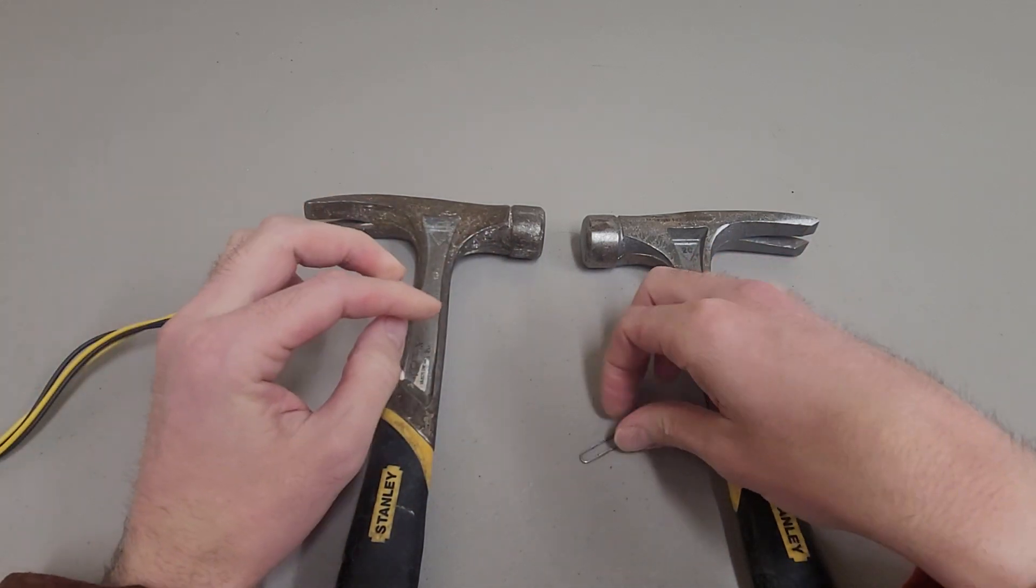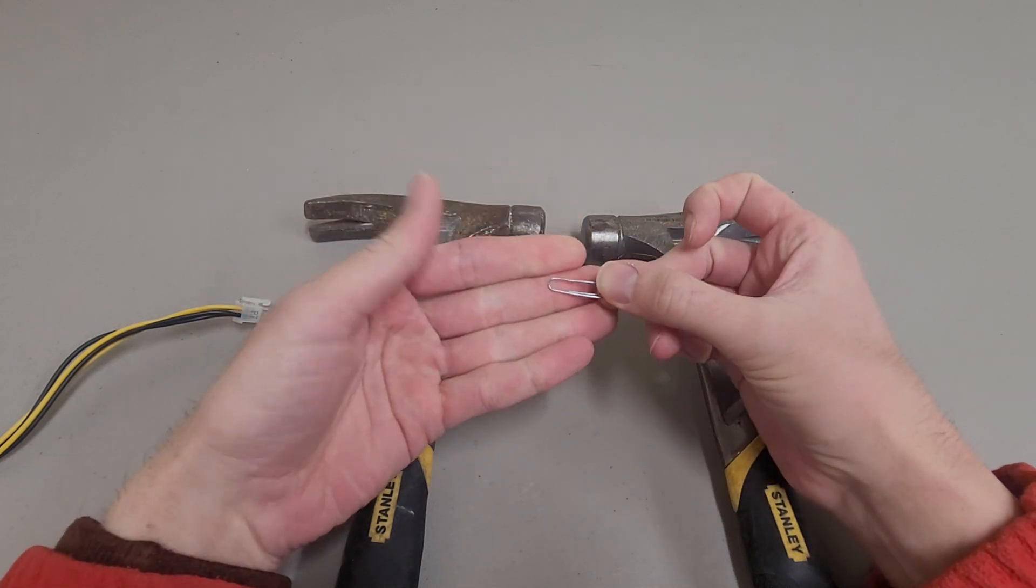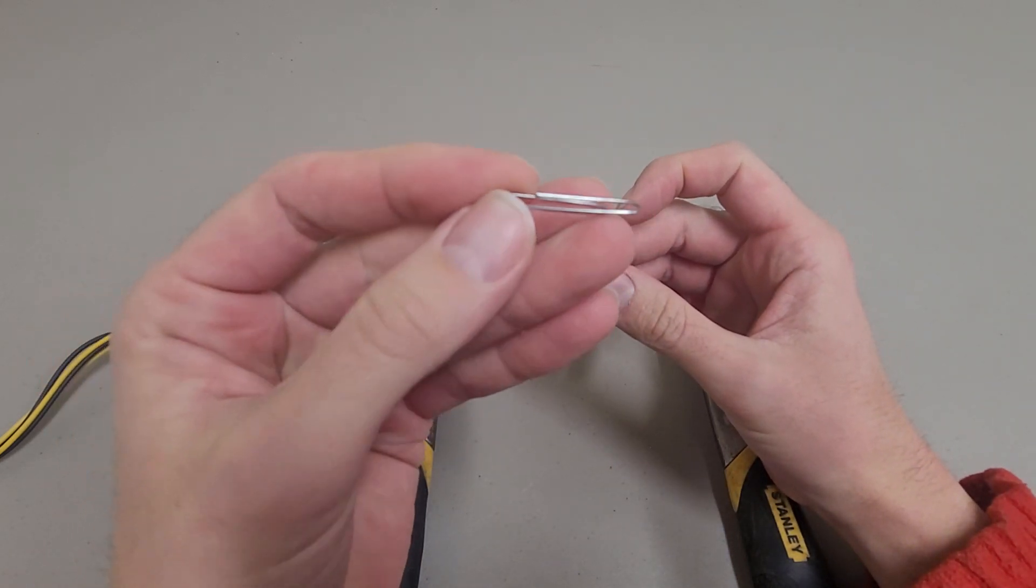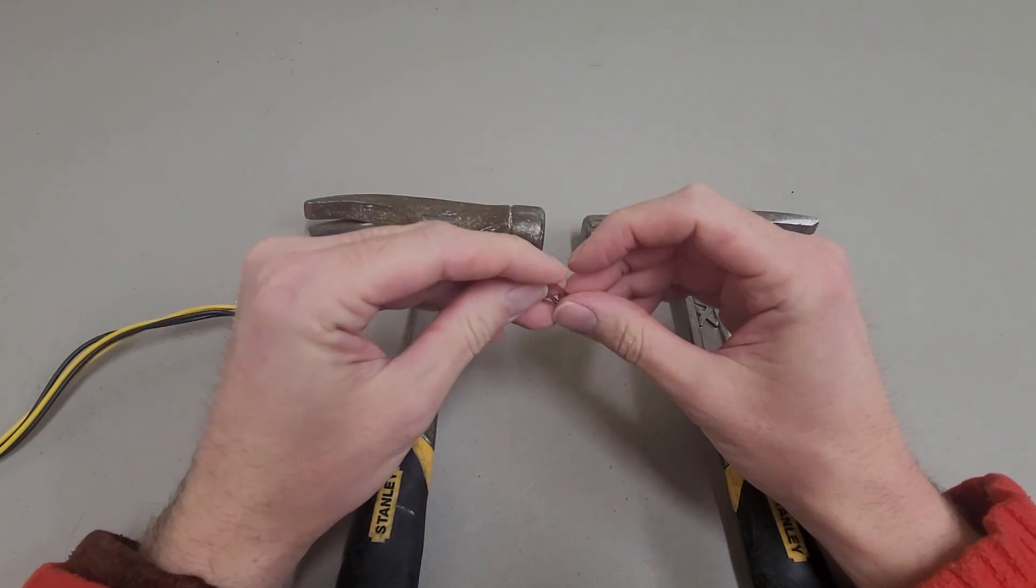Rather than buying that disposable tool, what I use is a small paper clip. You want to make sure it's not one of the weird ones with grooves cut into it, just a regular little paper clip.